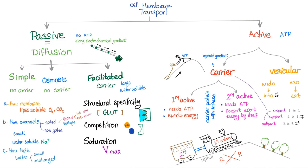Active transport includes carrier active transport and vesicular active transport. For carrier, we have primary active transport and secondary active transport. For vesicular, we have endocytosis and exocytosis. Primary active transport requires ATP and takes place against the electrochemical gradient — we exert energy at the primary active transport site. Secondary active transport also needs ATP, but it does not exert the energy by itself; it depends on the energy exerted and released at the primary active transport site.